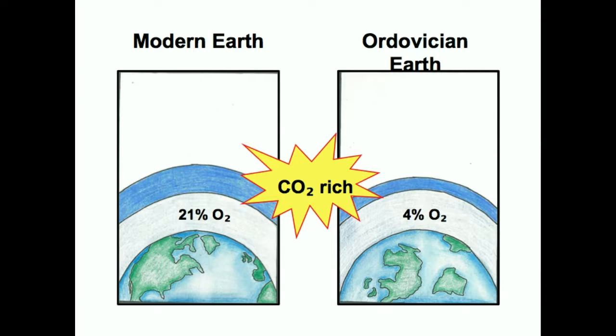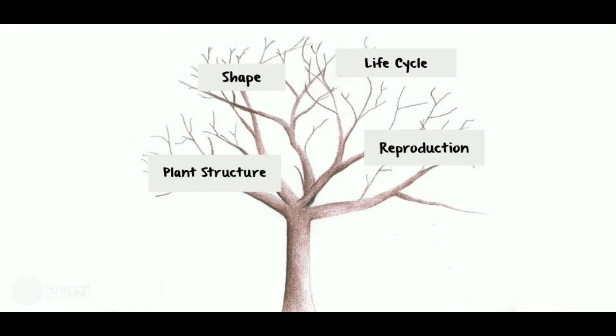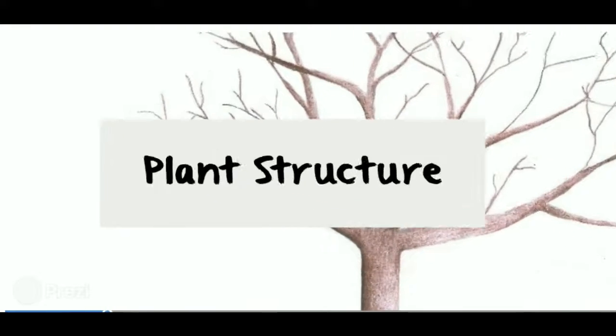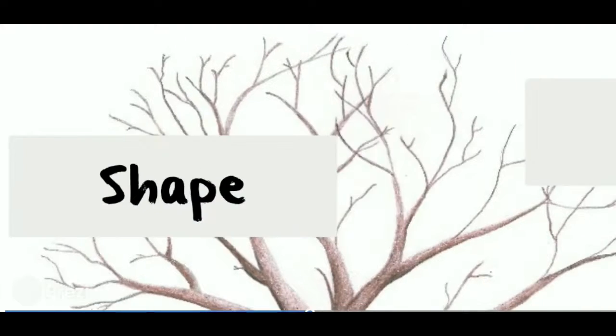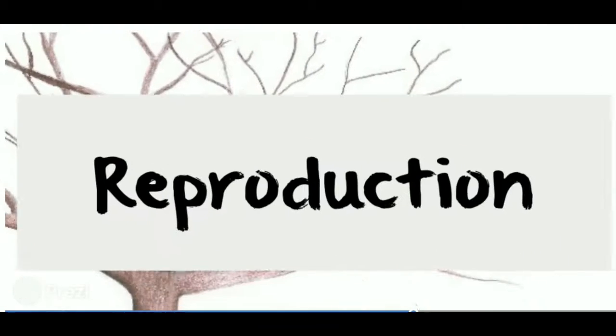The ozone layer would have been much thinner with this low level of oxygen, and this would have been a major limitation to the terrestrialization process. Along with these changes in environmental conditions, major evolutionary changes in plant structure, shape, life cycle, and reproduction were crucial in order for plants to succeed on land.